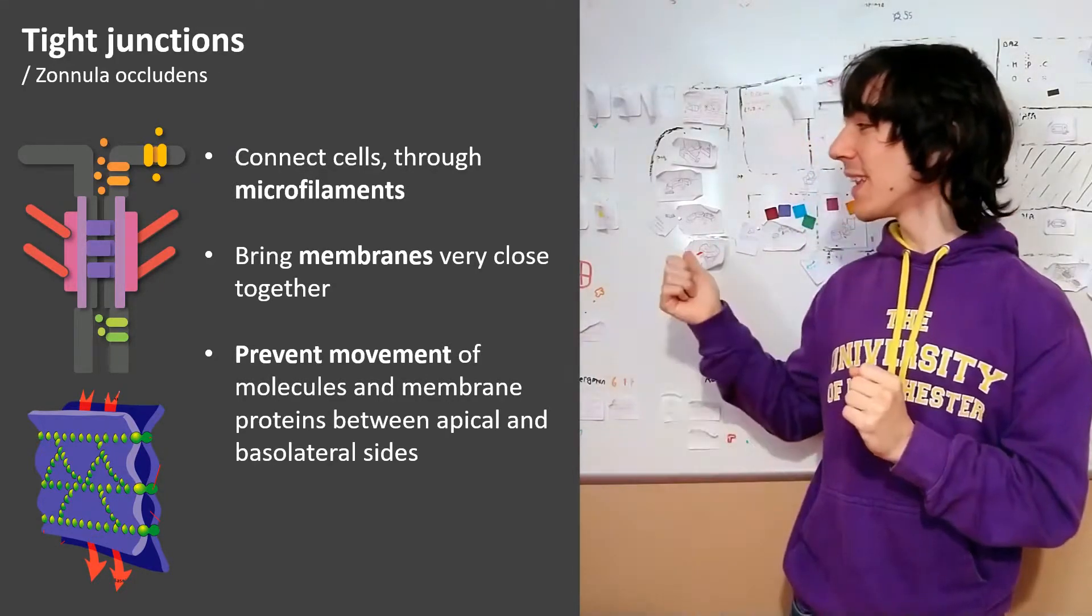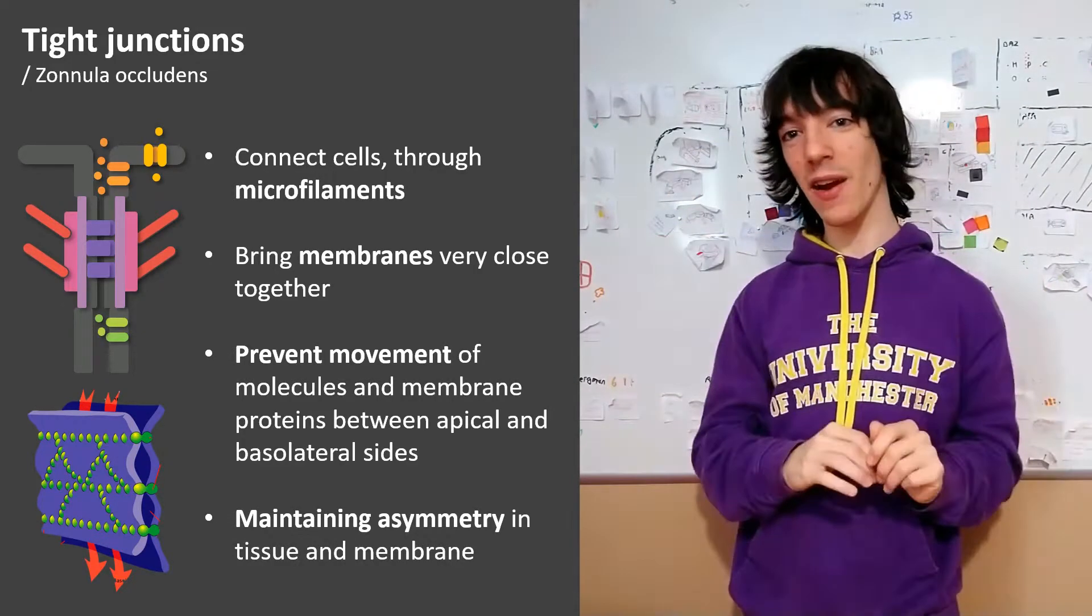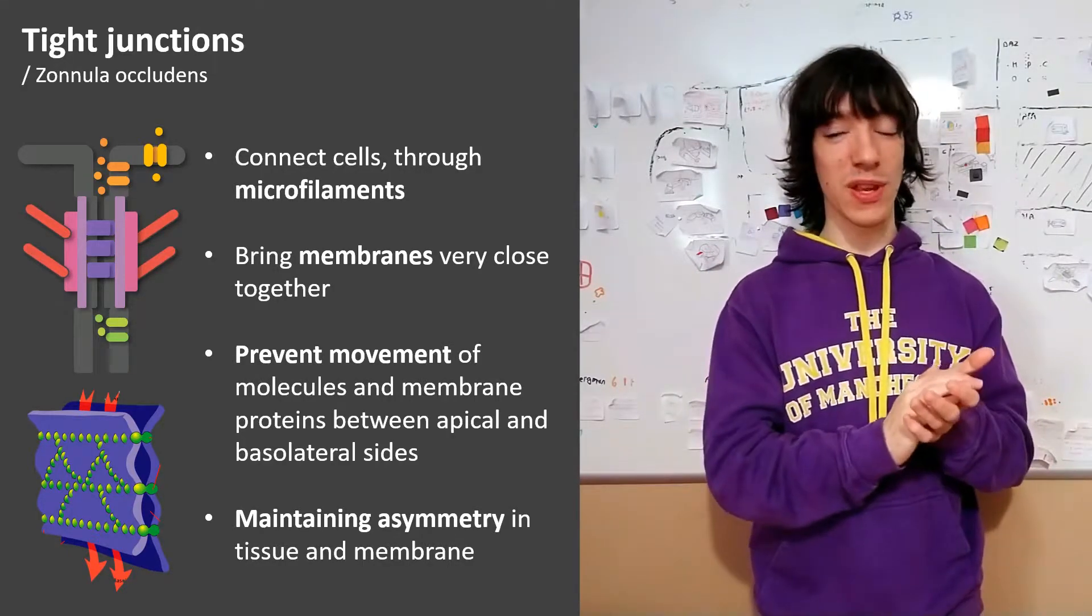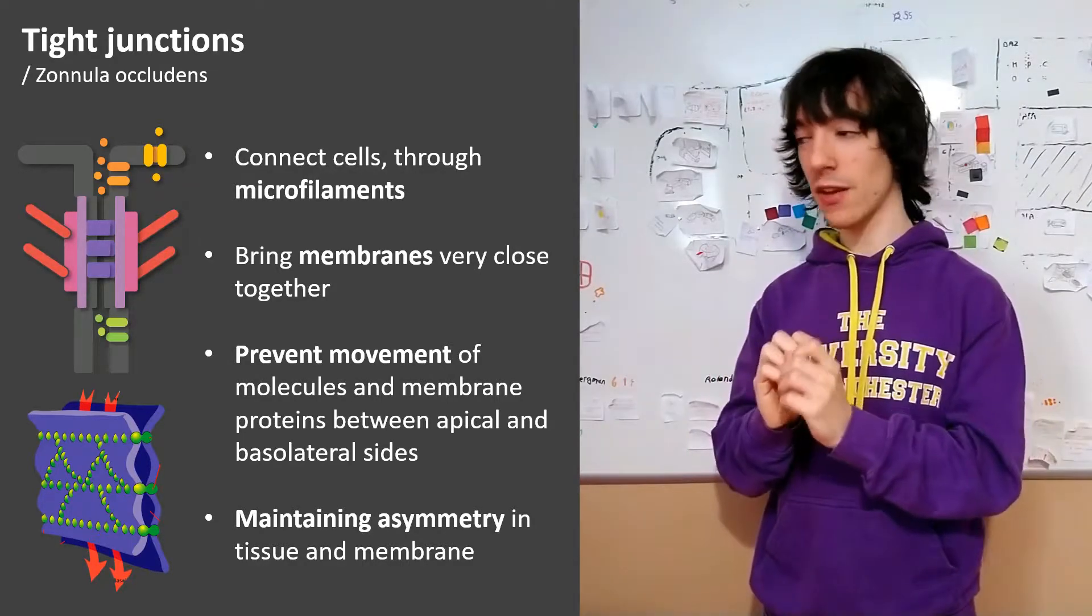That allows them to maintain asymmetry in a tissue between sides of a cell layer or between sides of the plasma membrane of the cell. They don't create the asymmetry, but when the asymmetry has been created, they ensure that it lasts.